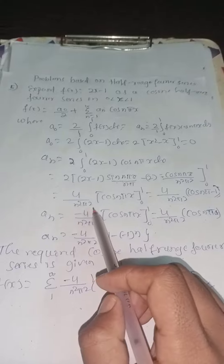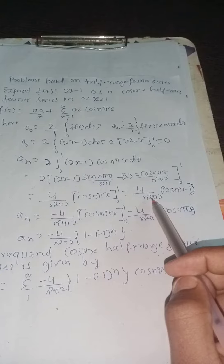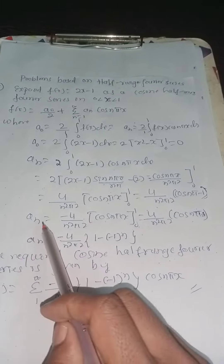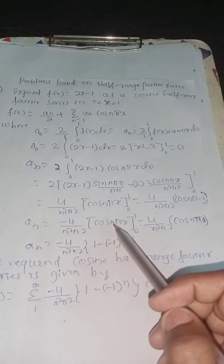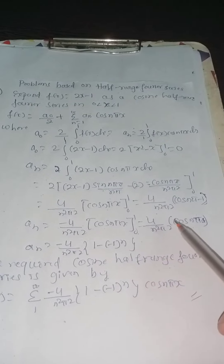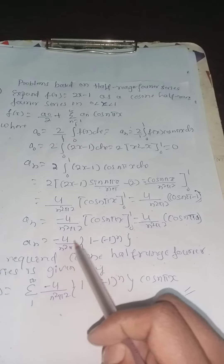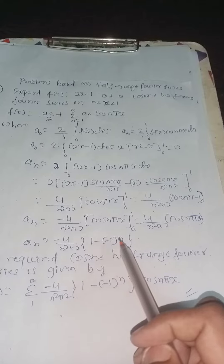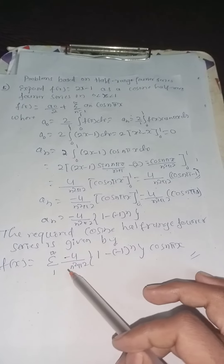That simplifies to 4 divided by n squared π squared times (cos nπ minus 1). Equal to 4 divided by n squared π squared times (cos nπ minus 1). Then an equal to minus 4 divided by n squared π squared times (cos nπ minus 1), which equals minus 4 divided by n squared π squared times (1 minus (minus 1) raised to n).